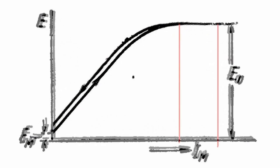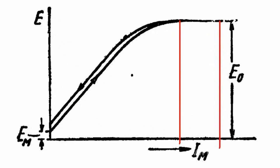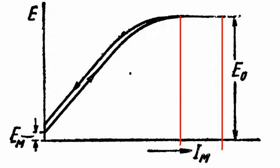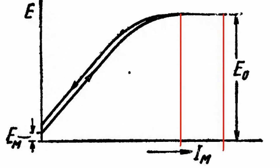Note that small exciting current oscillations have slight impacts on the EMF value. The relation of the voltage applied to armature clamps to current flowing in the external circuit at constant exciting current and armature rotation rate is called the load or external characteristic.